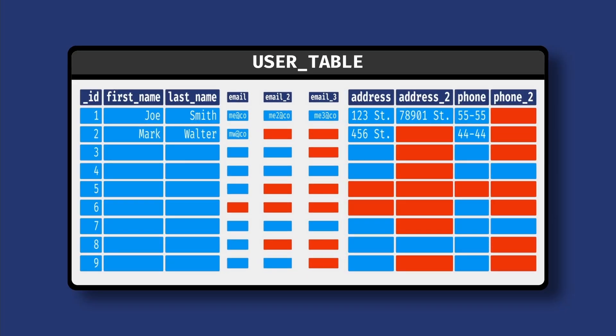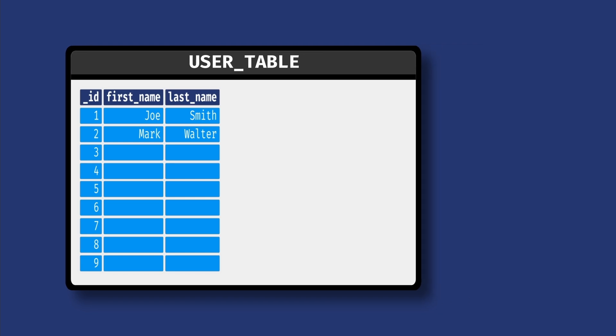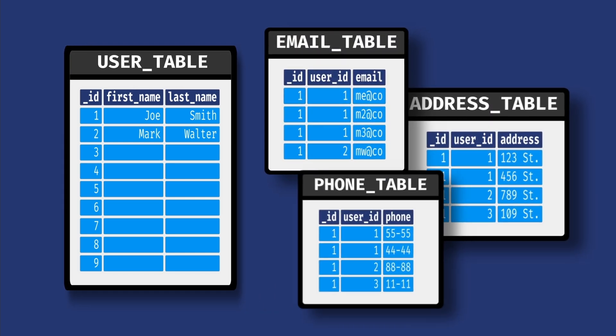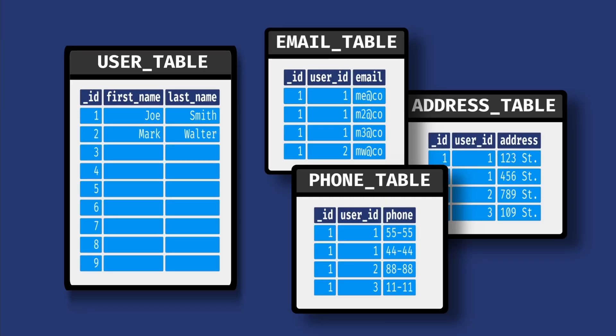Now because of this, relational databases separate related data into their own tables. We can extract the email address, physical address, and phone number columns and put them in their own table, which is tied back to the original table record with an ID. This is where the term relational comes from. The data in these tables are related. So now we have multiple tables relating back to the original table of records. If we want to get the information for one record, we now have to access multiple tables and join the data back together.